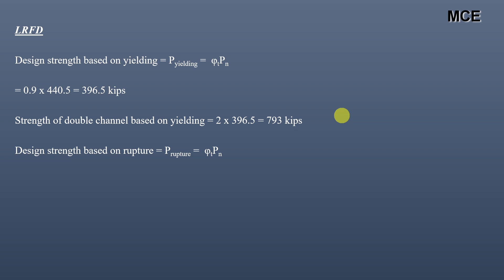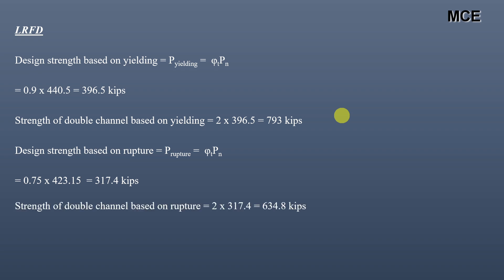Nominal strength in rupture for one channel section = Fu × Ae = 65 × 6.51 = 423.15 kips. Design strength based on rupture = resistance factor × nominal strength in rupture = 0.75 × 423.15 = 317.4 kips. Strength of double channel based on rupture = 2 × 317.4 = 634.8 kips. These are the design strengths for yielding and rupture.